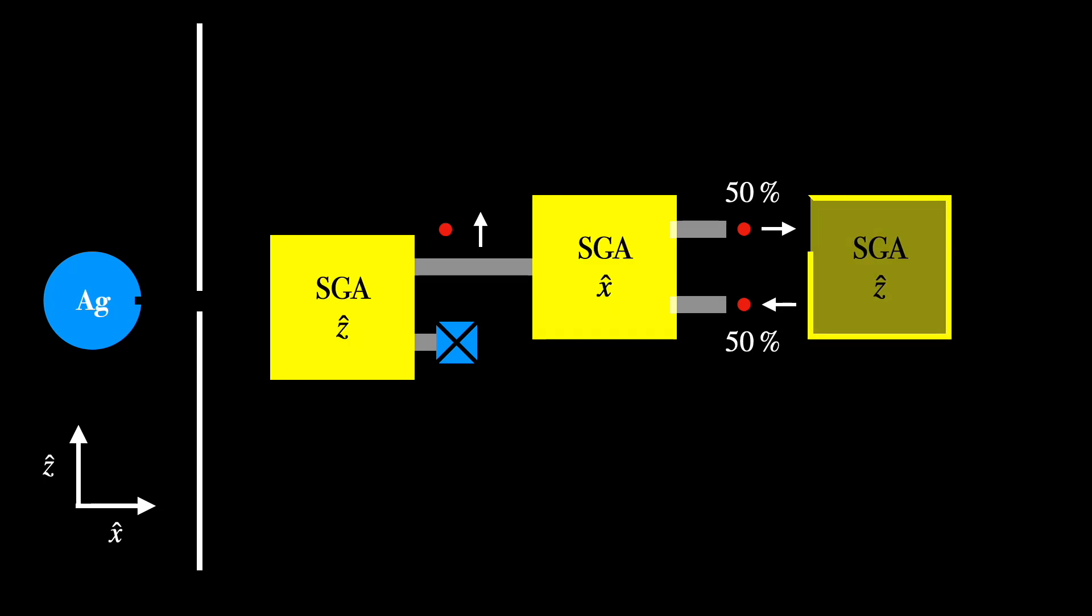Okay, so the next step is where things get extremely interesting. We'll insert a third Stern-Gerlach apparatus, and this time one that is oriented again in the z direction. And we will filter out the atoms that are x down and only take in atoms that are x up. So to be extremely clear, our setup is that we send atoms into an apparatus oriented in the z direction. We take only the atoms that are z up and send them into another apparatus in the x direction. Finally, we take only the atoms that are x up and feed them into an apparatus oriented in the z direction.